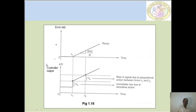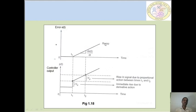This graph shows the PD mode controller. The error e(t) with respect to time and its derivative de(t)/dt are shown at time T1. The controller output P(t) over time is shown. Between times T1 and T2, Vd is the immediate rise due to derivative action, and Vp is the rising signal due to proportional action.